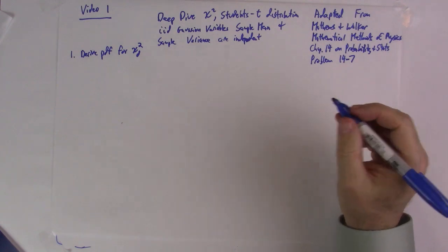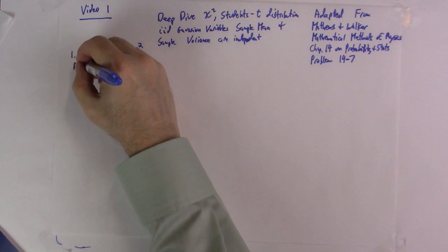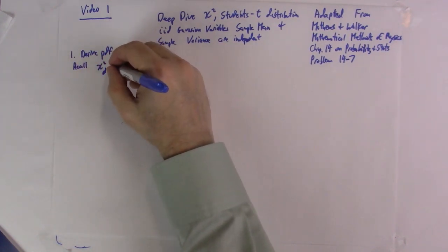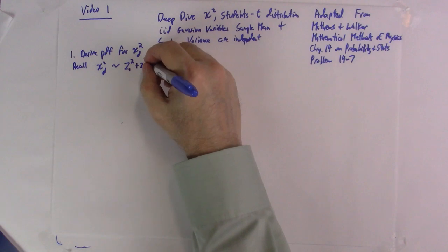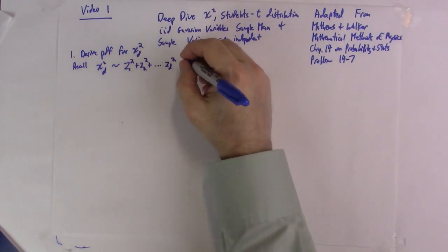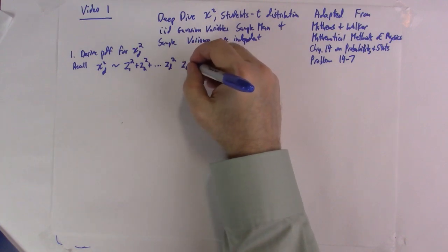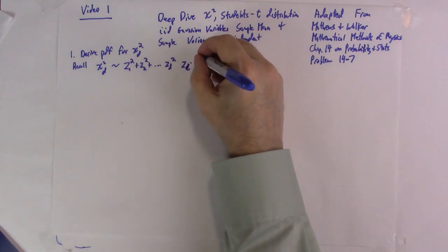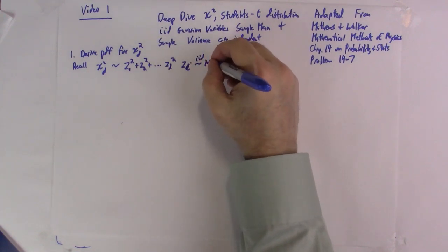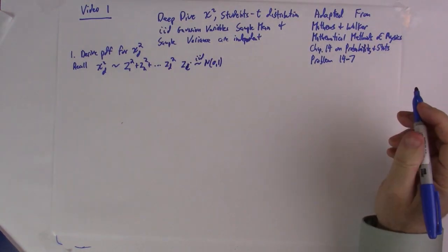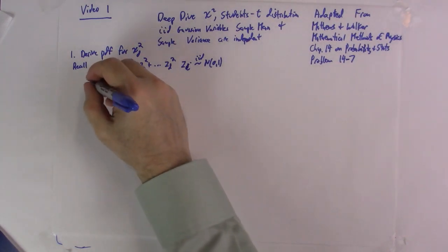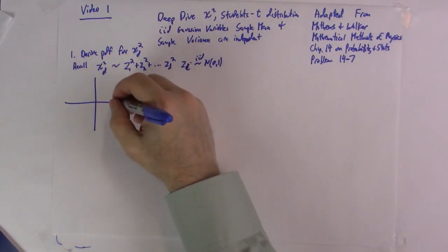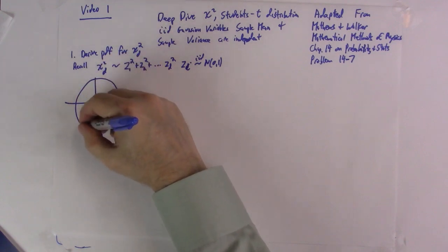Recall that chi-squared is just defined as the distribution of the sum of d standard normal random variables. The zi are IID, that's the crucial thing. They're all standard normal but they have no covariances. To get a handle on this I'll just show that if we're in two dimensions because I can draw easily in two dimensions, a circle.